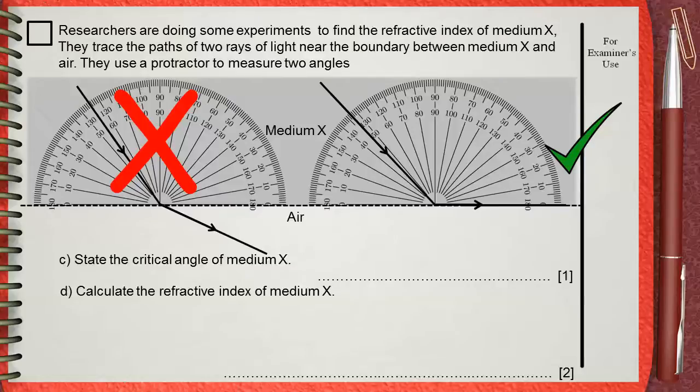Remember, we cannot do anything in optics without drawing the normal. This is the normal. Because the refracted ray is along the surface, this means that the angle of refraction is 90. Remember that we take the angles with the normal, not with the surface.